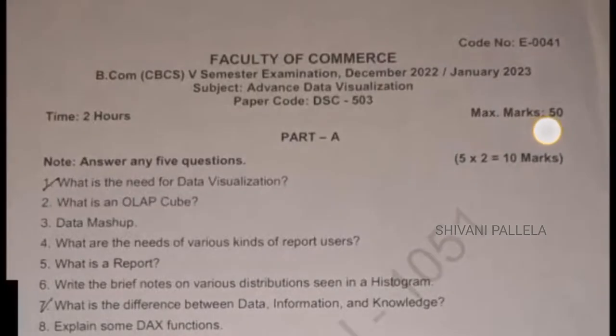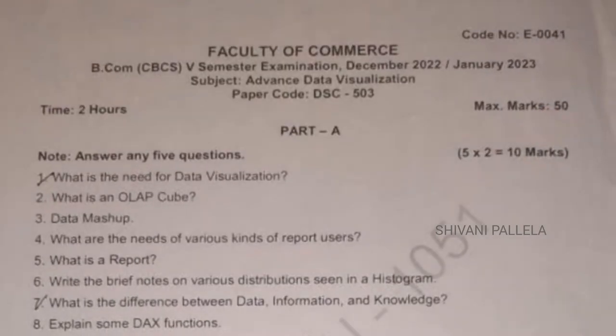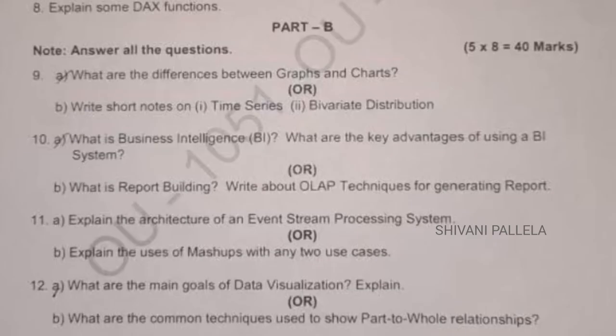Basically it's a 50 marks question paper and two hours is the time duration. In Part A, eight questions will be asked and you need to attempt any five questions, which consist of two marks each. In Part B, five questions will be given and in each question you will have an internal choice, option A as well as B.